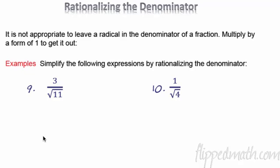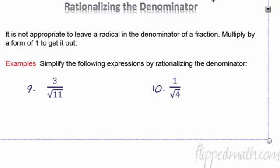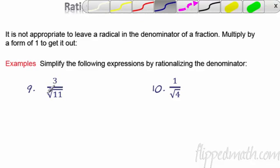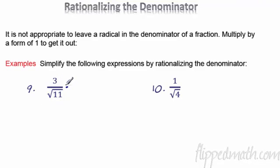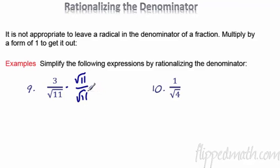Rationalizing the denominator. We want to get any radicals out of the denominator because we don't like to have them down there. They're irrational — they keep going on and on. We can't divide by that. So in math, we don't like radicals in the bottom of a fraction. The trick: whatever the square root is in the bottom, multiply by that over itself. This is equivalent to 1 — anything over itself is 1 — so we're not changing the value of the fraction.